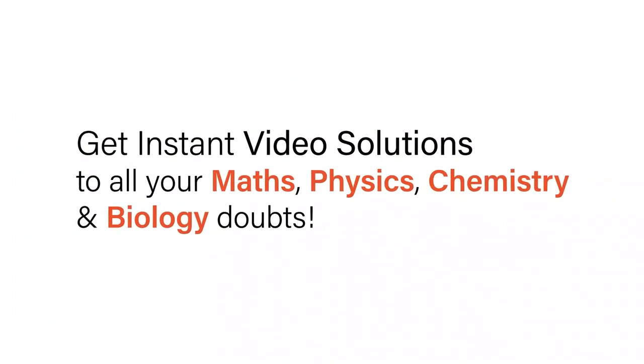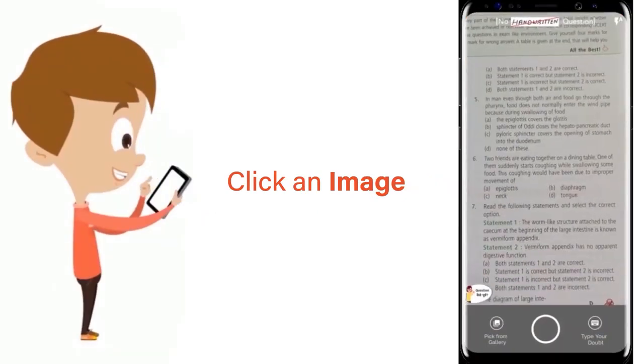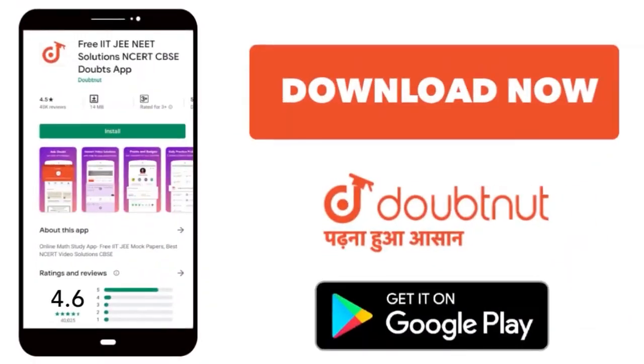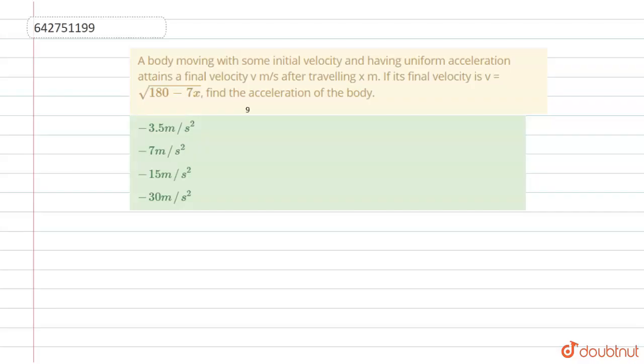With Doubtnut, get instant video solutions to all your maths, physics, chemistry, and biology doubts. Just click the image of the question, crop the question, and get instant video solution. Download Doubtnut app today. Hello students, here's a question: a body moving with some initial velocity and having uniform acceleration attains a final velocity.